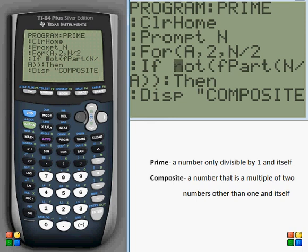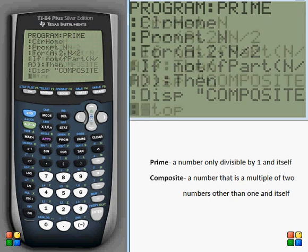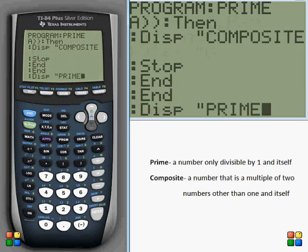Now if it never made it through that, then it would come all the way down here and display prime at the end of the for loop.